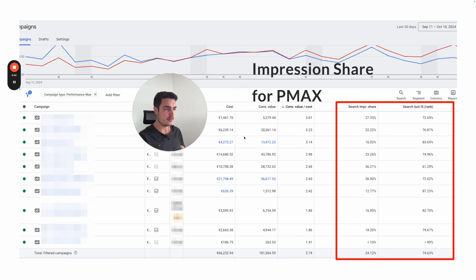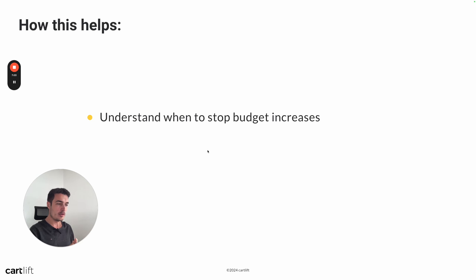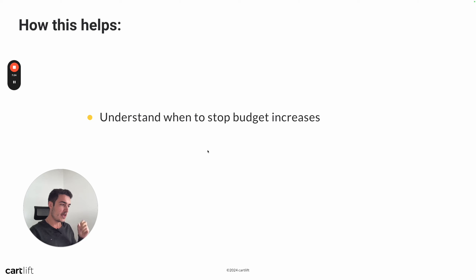I think it's live in all accounts, but I'm not 100% sure. The first benefit is that you now understand when to stop budget increases. With PMAX it was never that clear — it's a very large campaign type. We have examples where we spend thousands of euros or dollars per day on individual PMAX campaigns, and it was always a bit difficult to tell when we actually reached saturation, especially when running PMAX on max conversion value instead of a target ROAS. Now you know — if you have a 95% search impression share, it's probably not the best idea to spend a lot more money on PMAX.